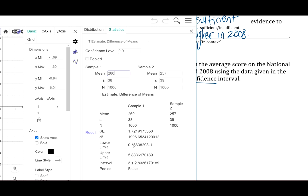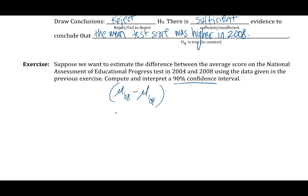If we round to two decimal places, it would be 0.17 up to 5.83. So there is the 90% confidence level.